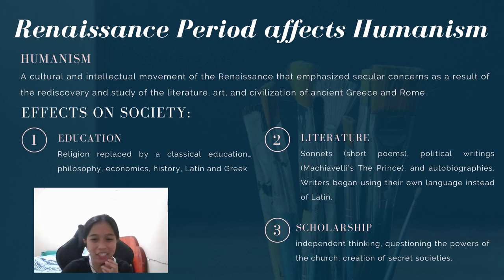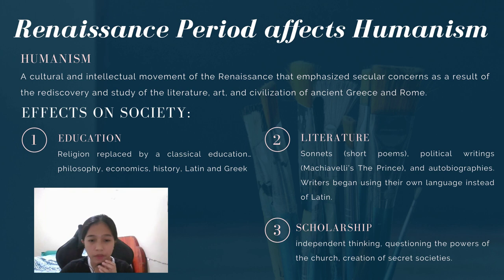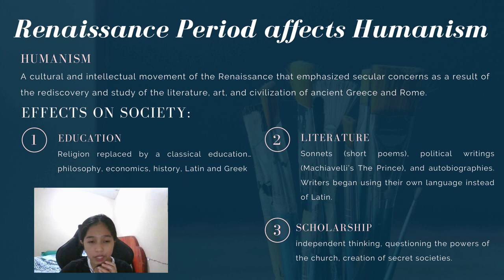Second is literature — people could develop their skills in writing poems or sonnets. And with enough knowledge, they could write political writing about what happened in their country. Lastly is scholarship — people with independent thinking had a wide knowledge and could answer complex questions.